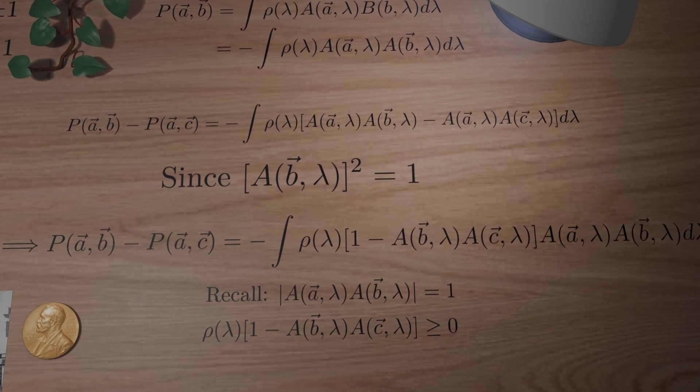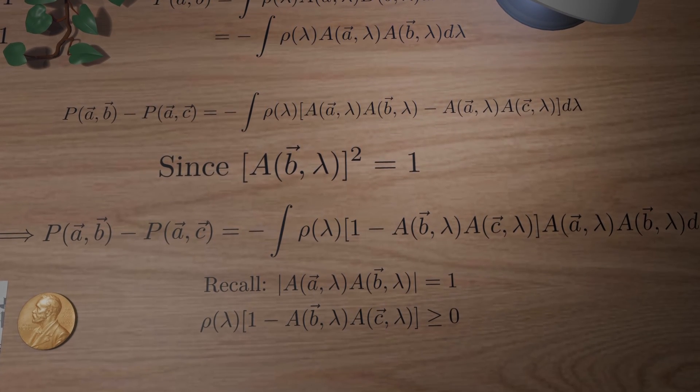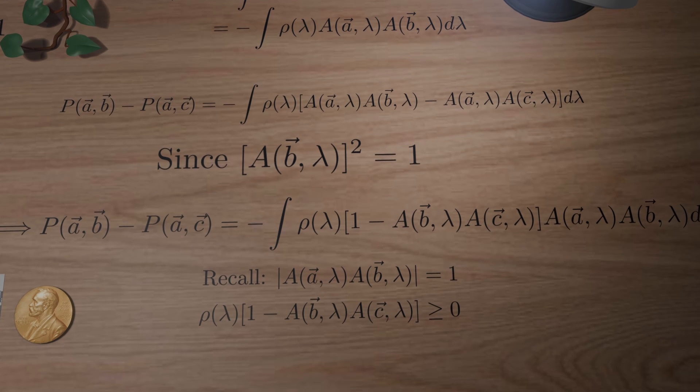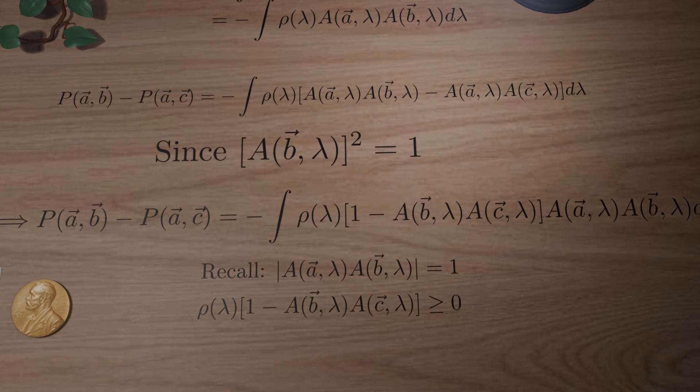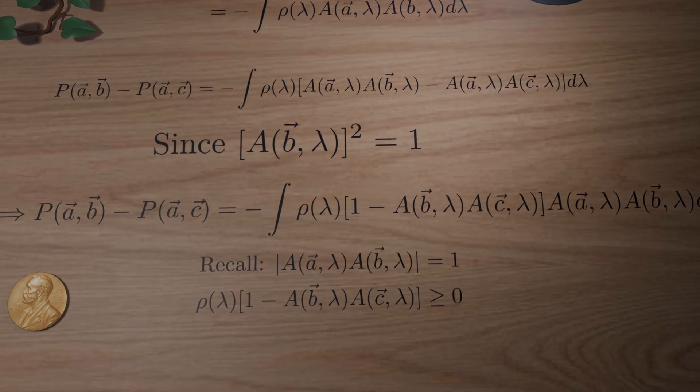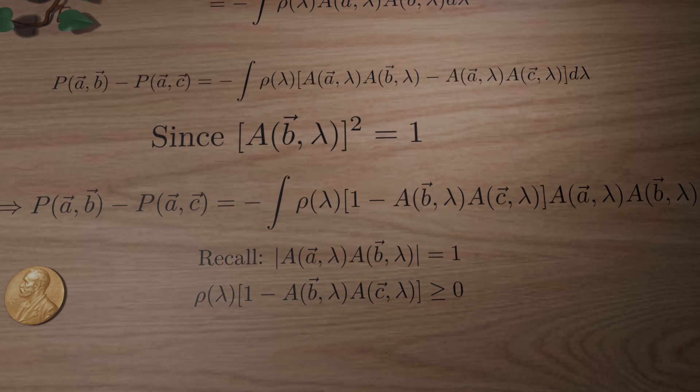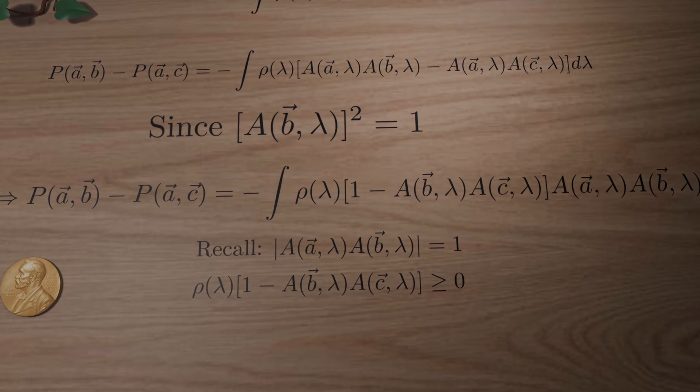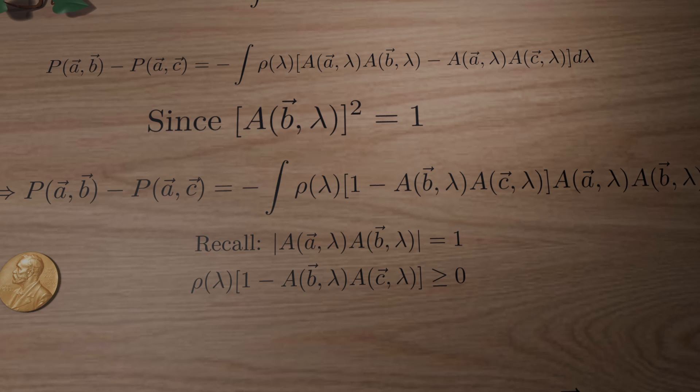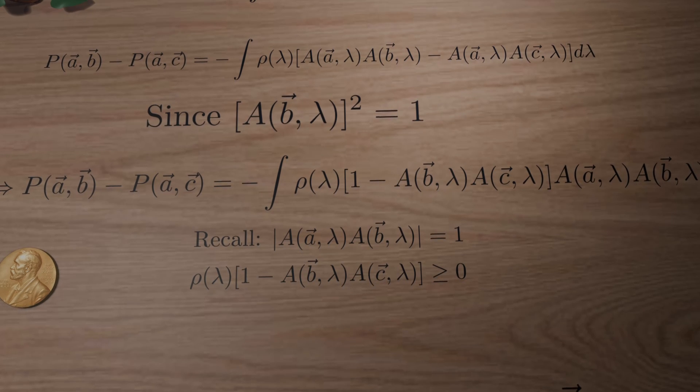Also, Rho of Lambda times 1 minus A of B times A of C is always greater or equal to 0. This is because the PDF of the hidden variables are positive semi-definite and the product of A of B times A of C is always equal to plus minus 1, so it has to be greater or equal to 0.